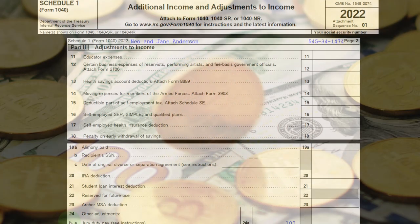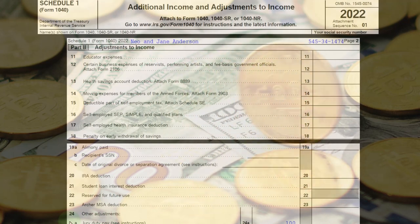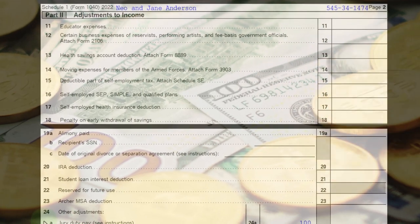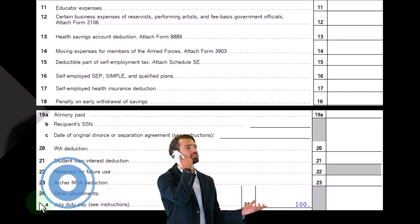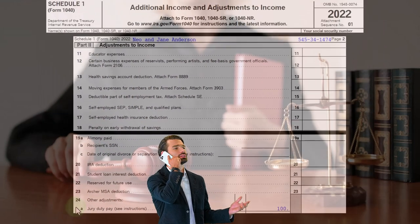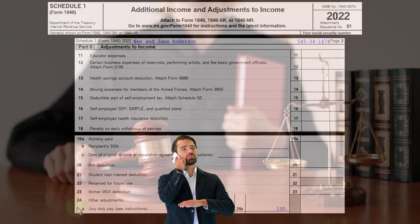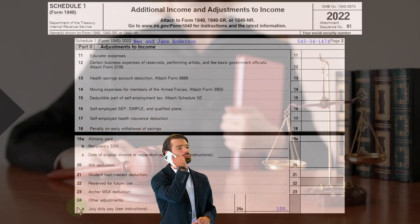However, oftentimes your employer has the situation of whether they're going to pay you for the time that you went to Jury Duty or not. If the employer is paying you for that time, they might say any money that you got for going to Jury Duty from the court — they want you to give that to them, and then they'll reimburse your normal pay. So that means you didn't really get paid for going to Jury Duty separately.